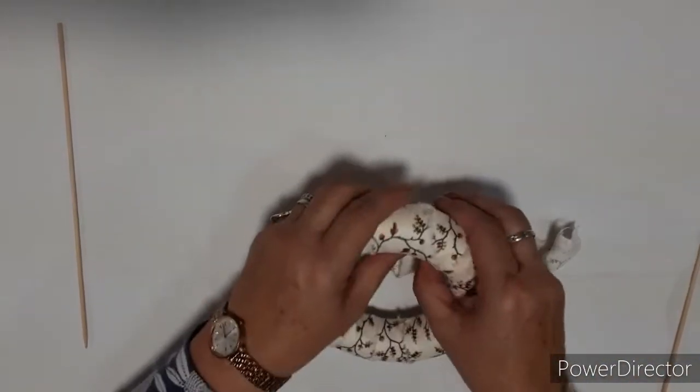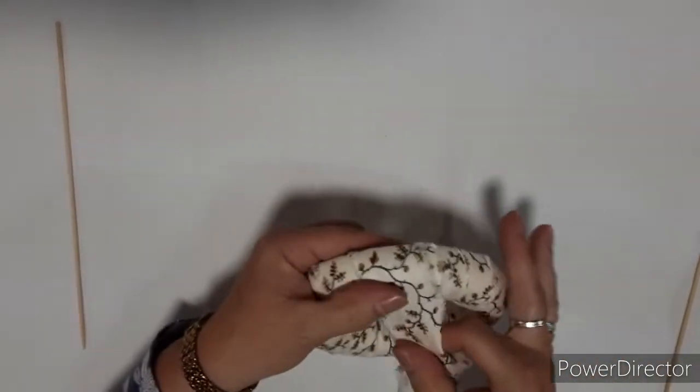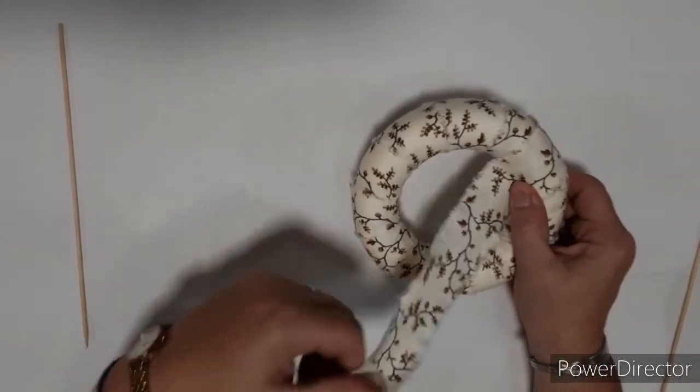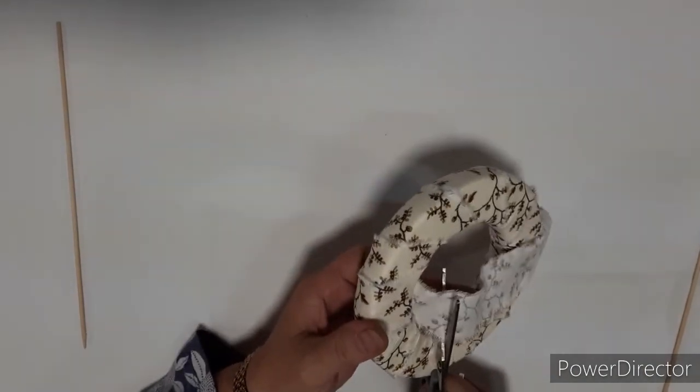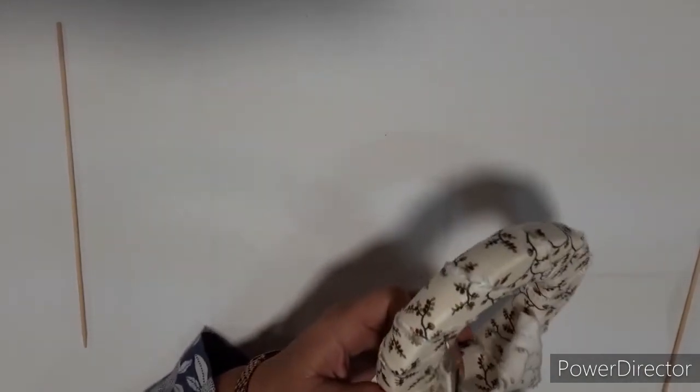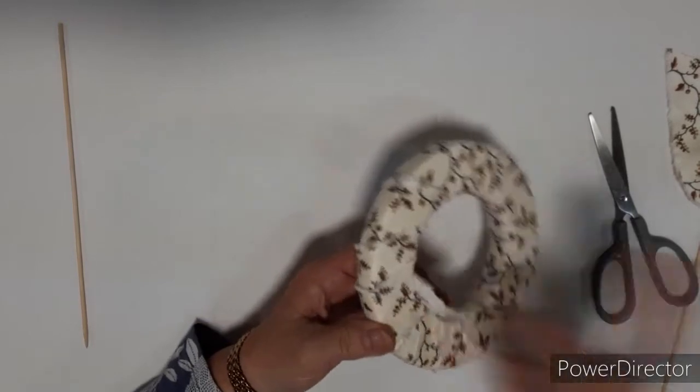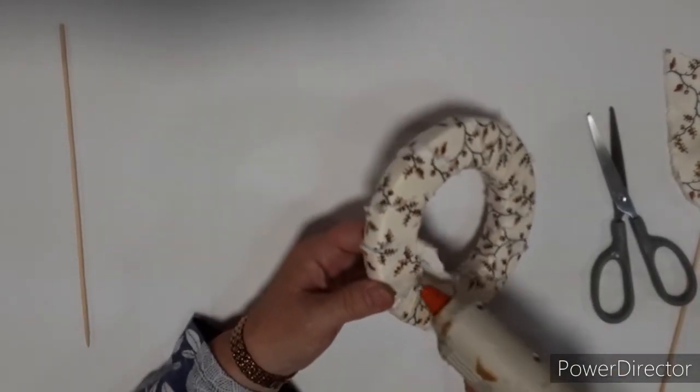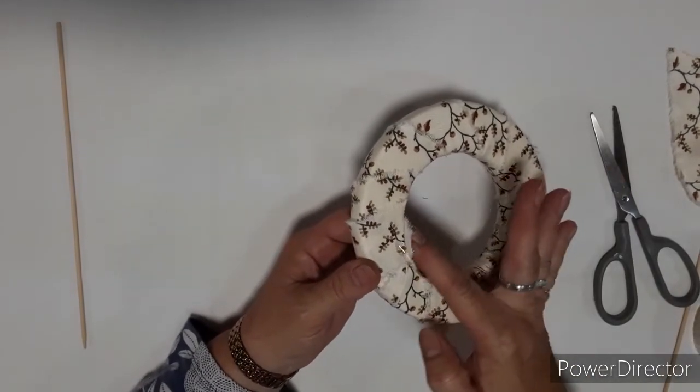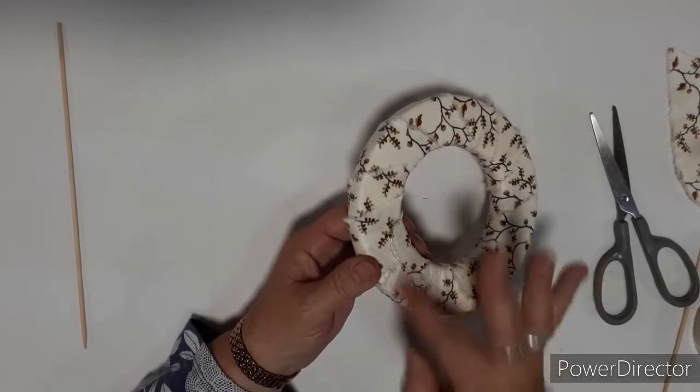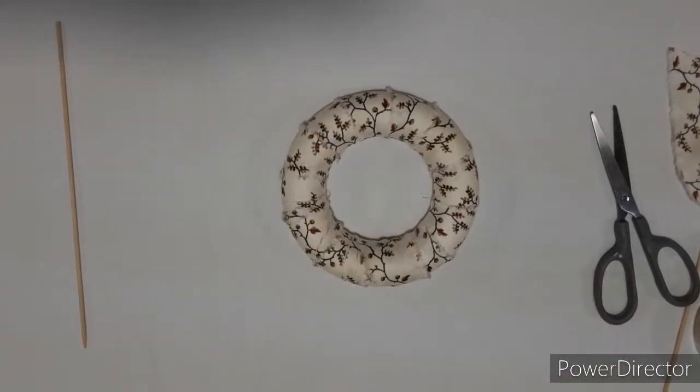Once you've met the join, take your fabric and you need to cut it at the back because that's where you're going to secure it. Put a blob of glue, so snip it off, and then get the glue gun. Wipe the glue on the back and fasten that down, wipe off any excess glue there. Be careful not to burn your fingers. There you have your ring.